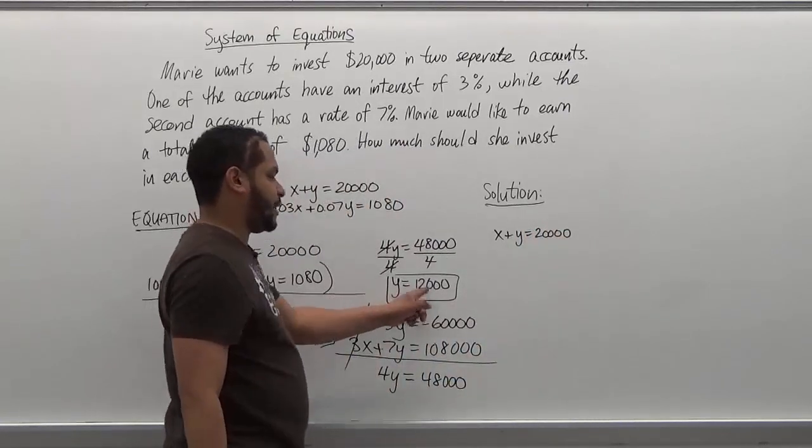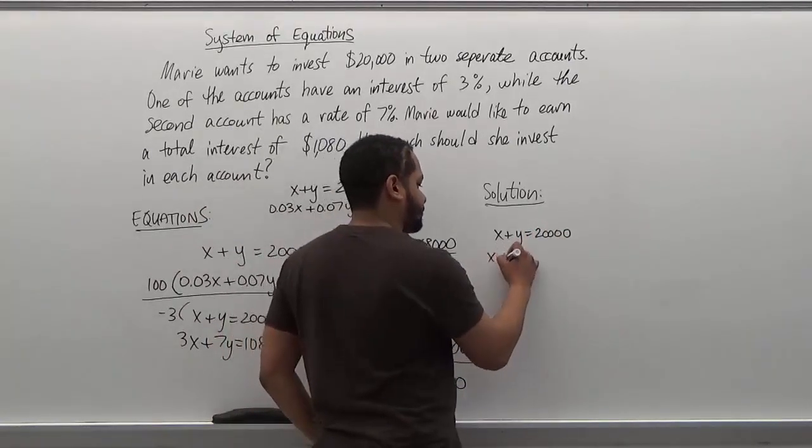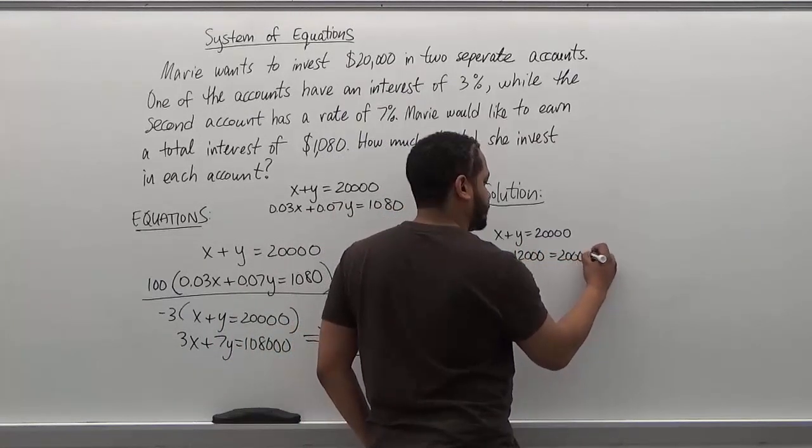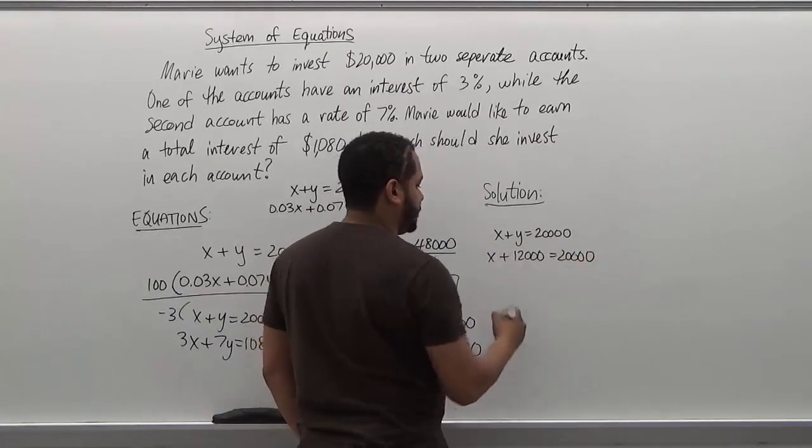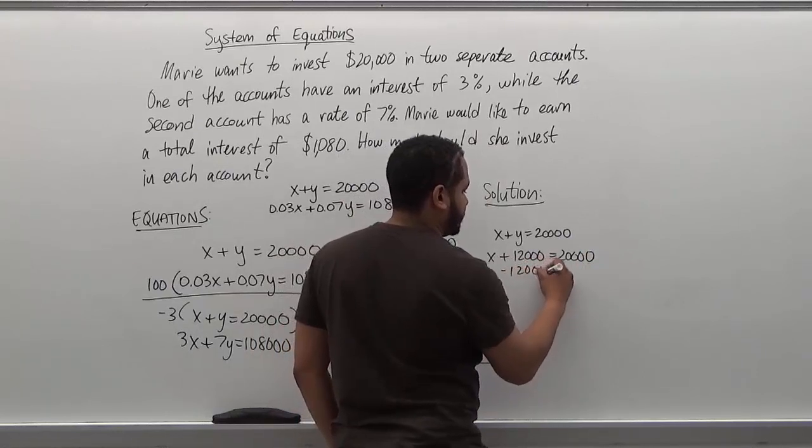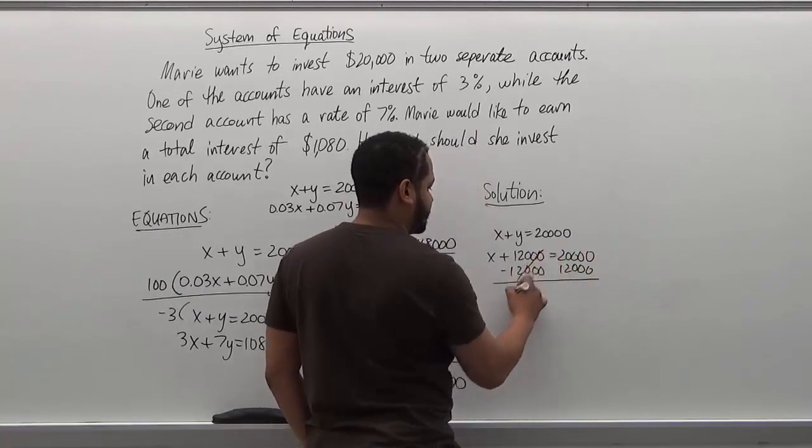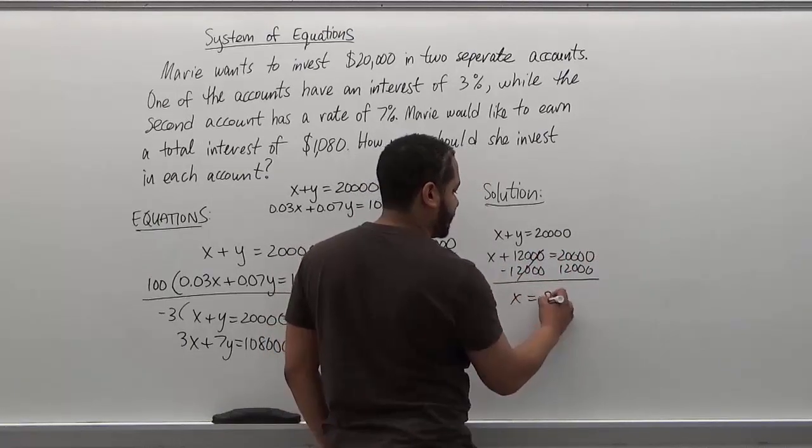The solution for y is 12,000. So we have x plus 12,000 equals 20,000. How to solve for x? We subtract 12,000 from 20,000. These cancel. We have x is equivalent to 8,000.